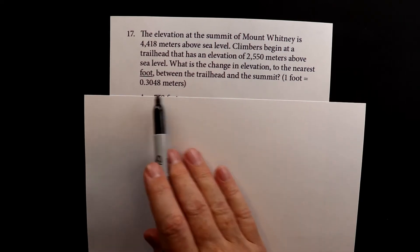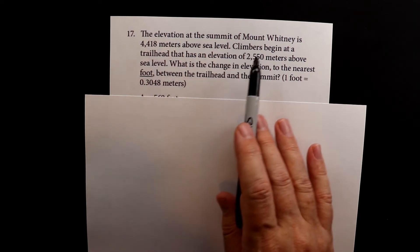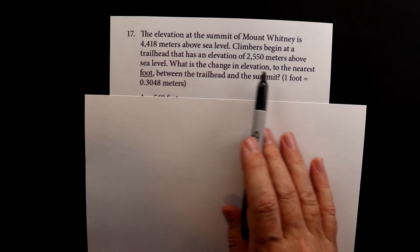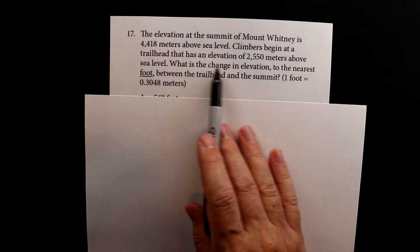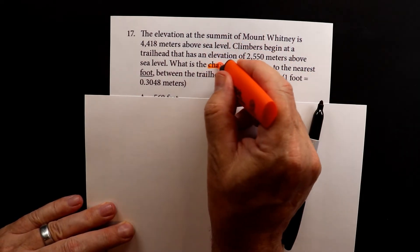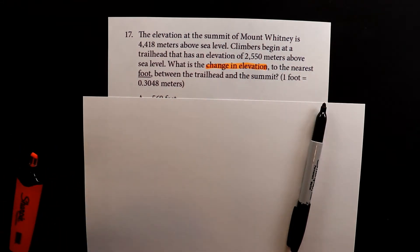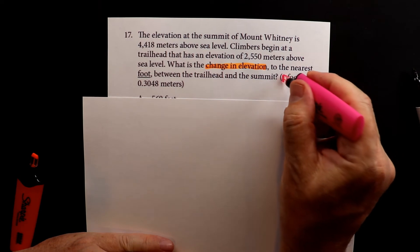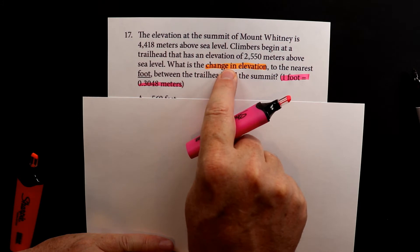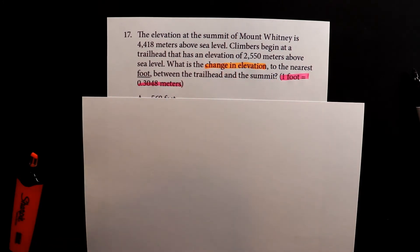The first thing you have to do is figure out the change in elevation from the trailhead to the summit. Whatever that change in elevation is, you then have to convert it to feet. So step 1 is find the change of elevation, and step 2 is do a conversion — we're changing the units.